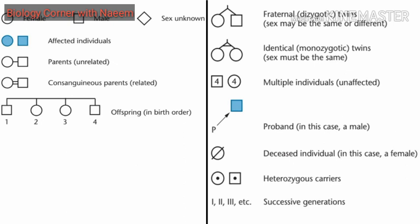A horizontal line connecting a male and a female is actually a marriage line — they are the parents. A marriage line can be shown in two ways: a single horizontal line is for a couple who are not related, and a double horizontal line is used for closely related couples, such as first cousins. You can also see siblings numbered from 1 to 4 in their birth order — a son, then two daughters, and finally another son. This is also called a sibship line.